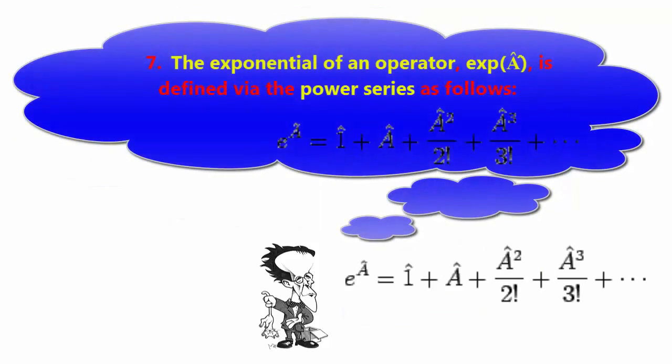7. The exponential of an operator is defined via the power series as follows. As a result,